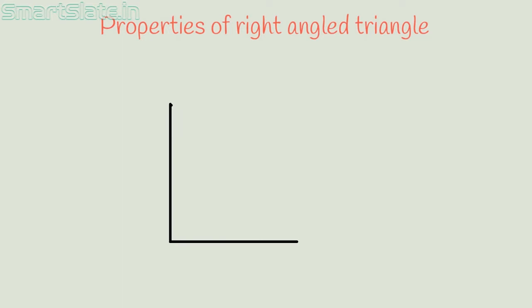In an isosceles right-angled triangle, that is, if two sides in the right-angled triangle are equal, each acute angle is 45 degrees.